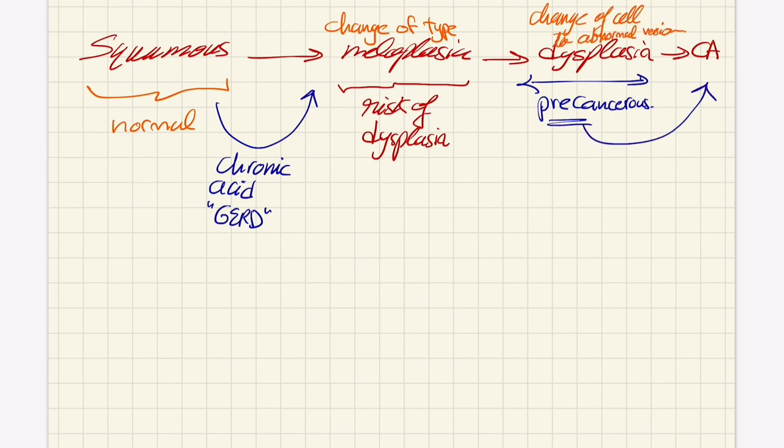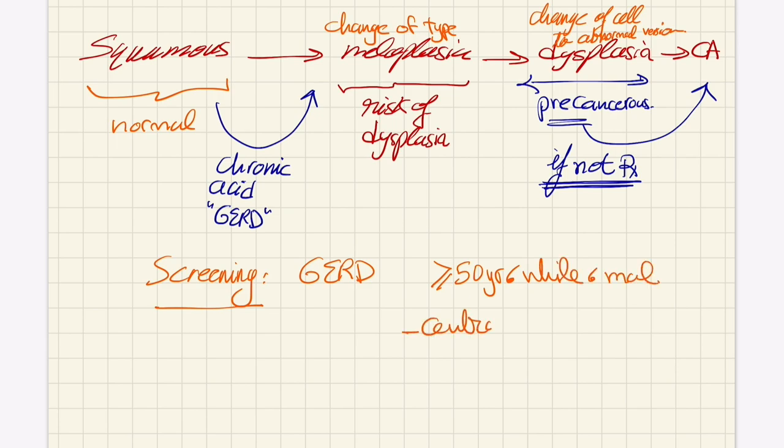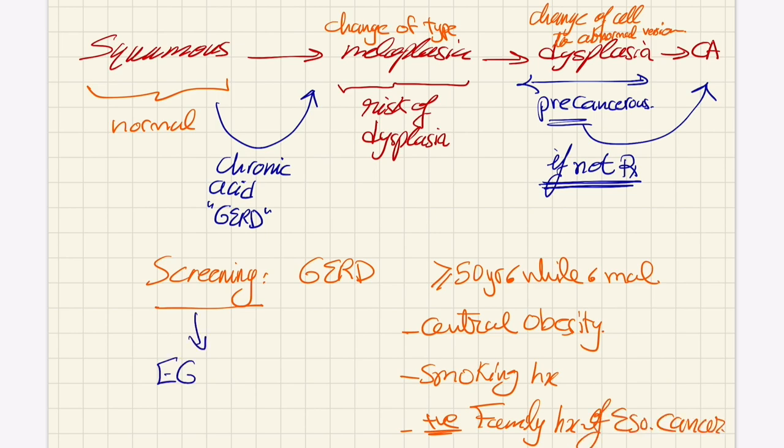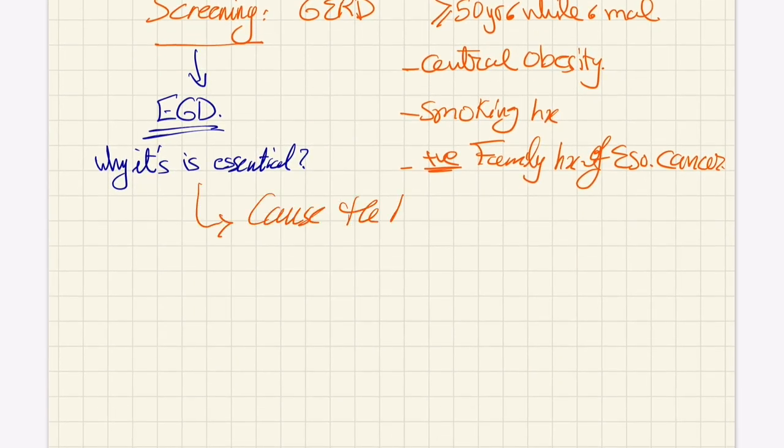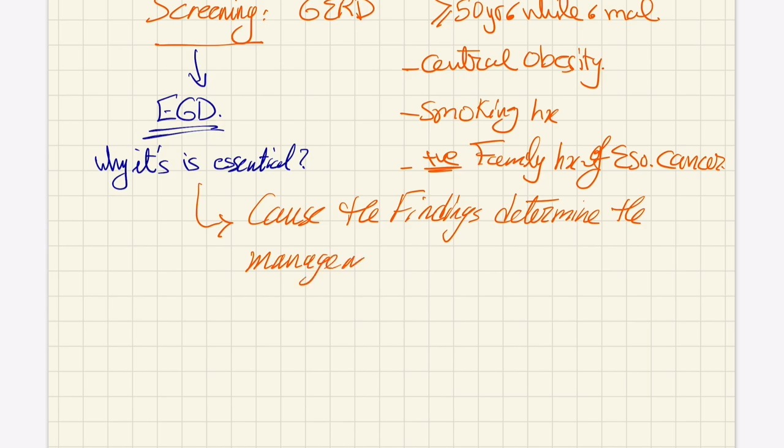You always need the scope in the assessment because based on the findings, you will determine the treatment and the frequency of re-scoping the patient. This is why EGD is essential. Just to clarify: you need symptoms more than five years for screening and any of the other findings, not all of them combined - just any one or two of them. Then you can start with the screening.